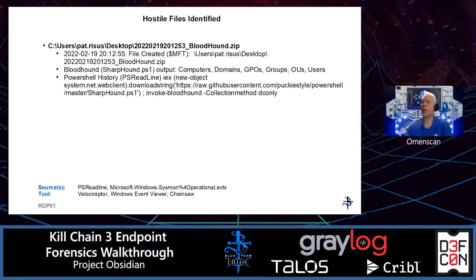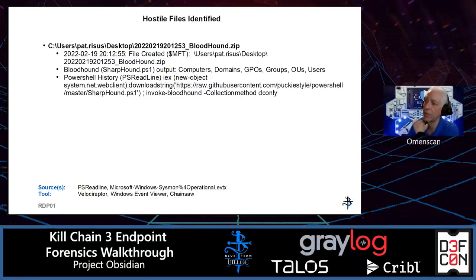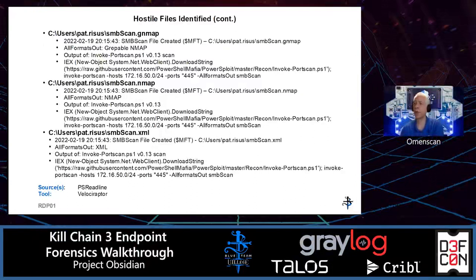One of the things we do when we analyze a machine is we look for files that look hostile. Actors don't always name their files obviously. In this case, we did see several files that looked like they could be created by the attacker. One of them was a BloodHound zip file on Pat Reese's desktop. We saw several other files indicating that PowerSploit had been run and the Invoke-PortScan module had been run on the machine.